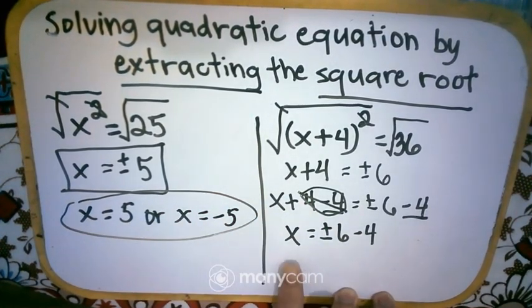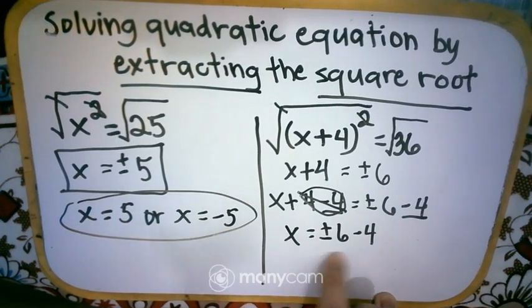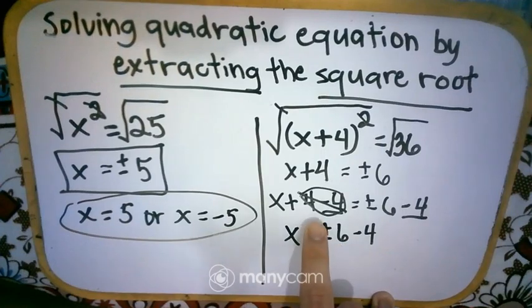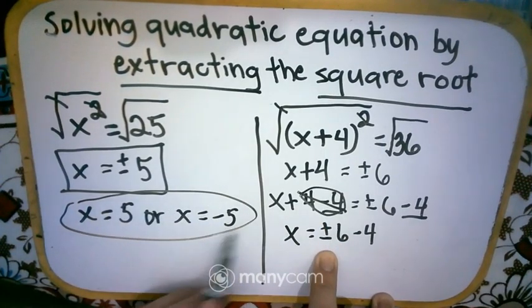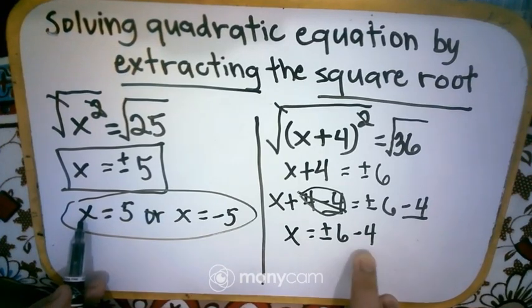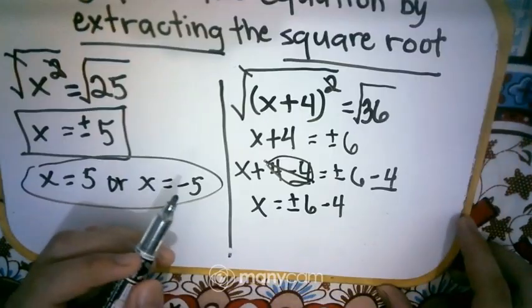So we have x is equal to positive negative 6 minus 4. So alone na yung variable, but we can still simplify the right side. So our 6 could be positive or negative. So we can expand it like this.